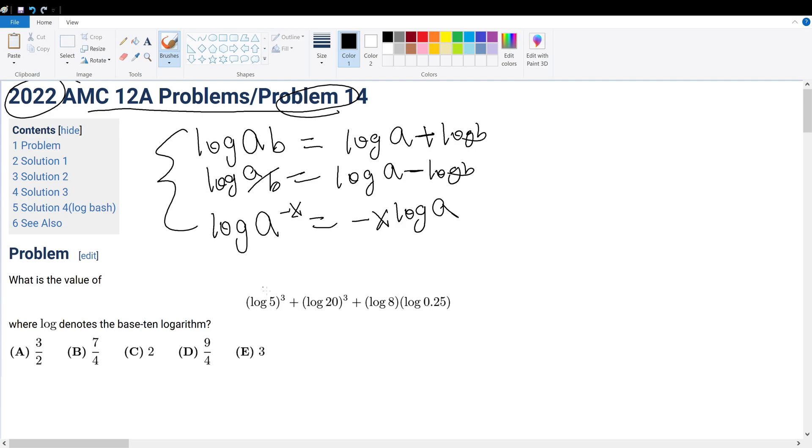So we could rewrite log 5 as log 10 divided by 2. Now log 10 divided by 2 equals log 10 minus log 2. And log 10 base 10 is 1, so we could rewrite this as 1 minus log 2.